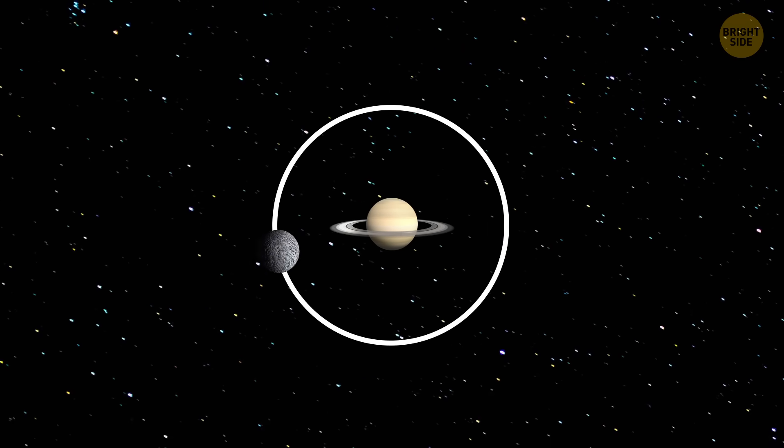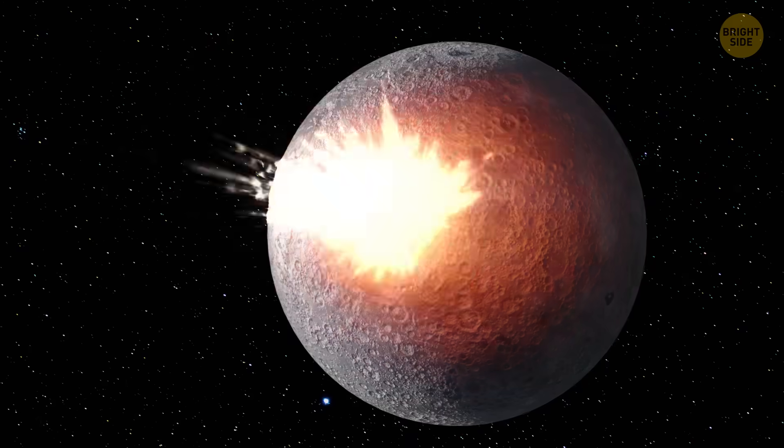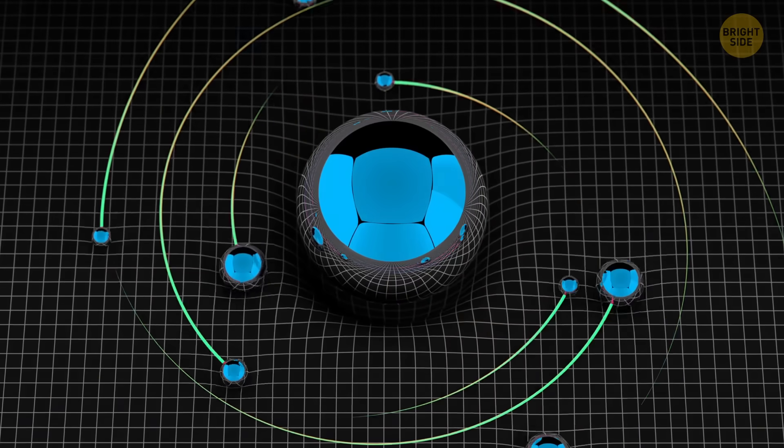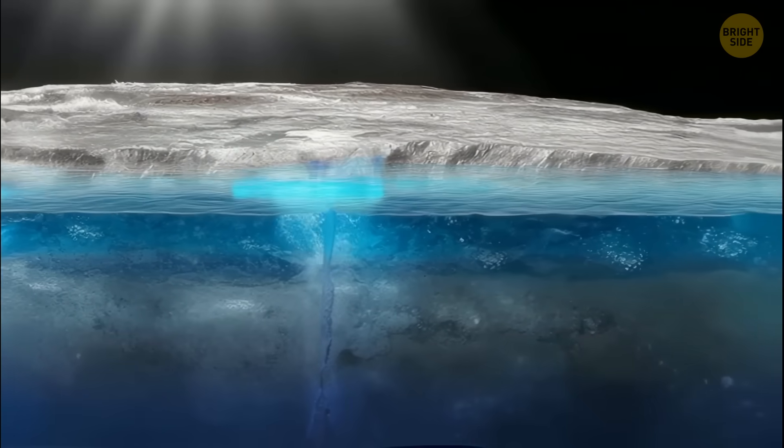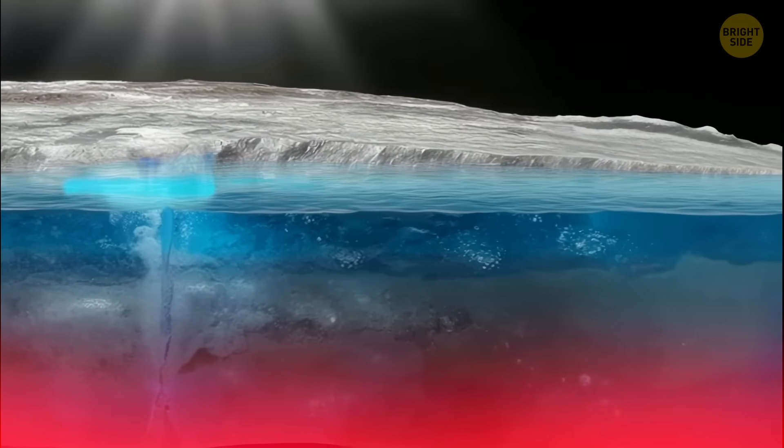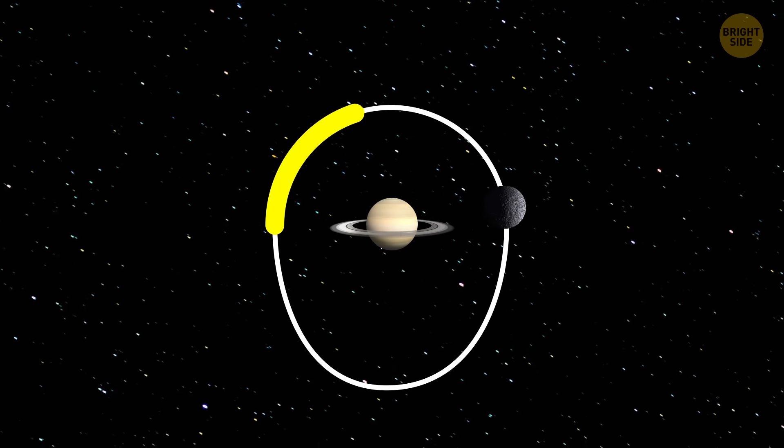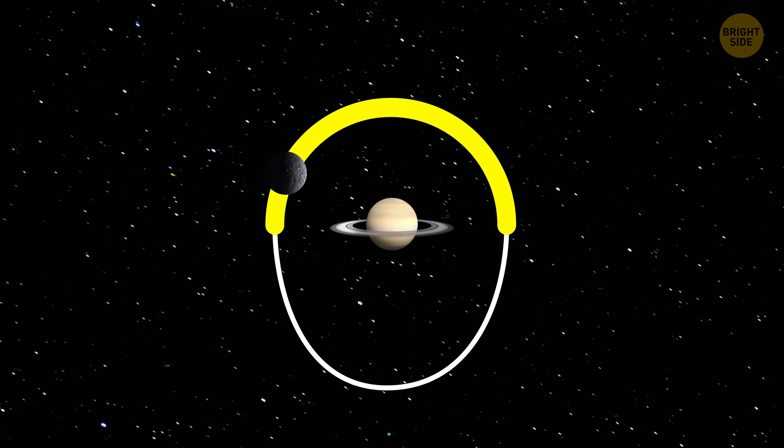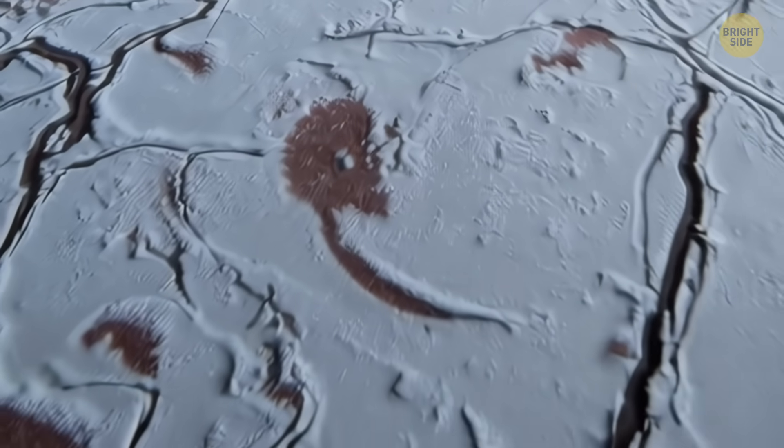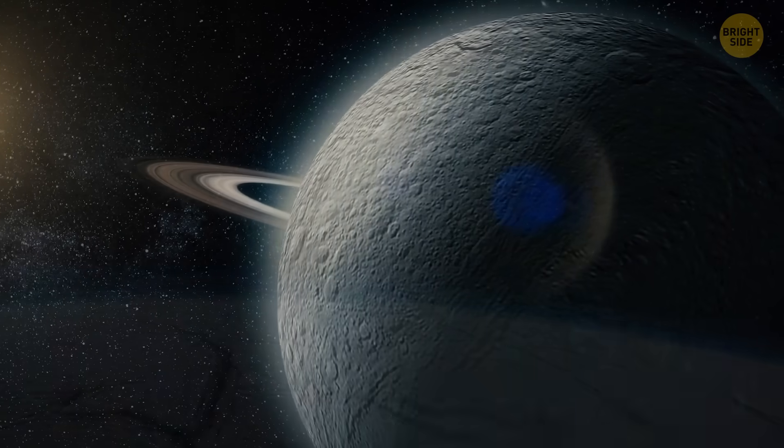So at some point, something kicked Mimas into a slightly weirder orbit, maybe a collision or a gravitational nudge from another moon. The inside of Mimas heated up, melted some of its ice, and created an ocean under the surface. But then, gravity slowly started to pull Mimas's orbit back into a circle again. When it does that, the heating will stop, and eventually, the ocean will freeze all over again.